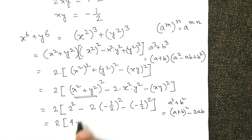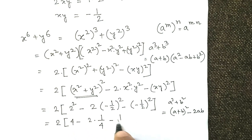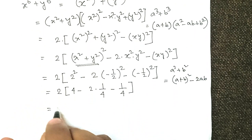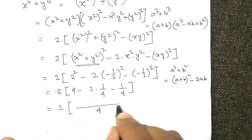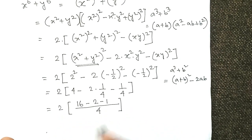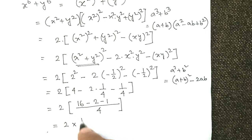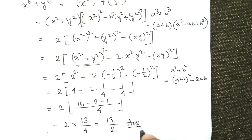Simplifying inside the bracket by taking LCM of 4, we get (16 minus 2 minus 1) over 4, which equals 13 over 4. Multiplying by 2 from outside, we get 2 times 13 over 4, which equals 13 over 2. So the final answer is 13 over 2.